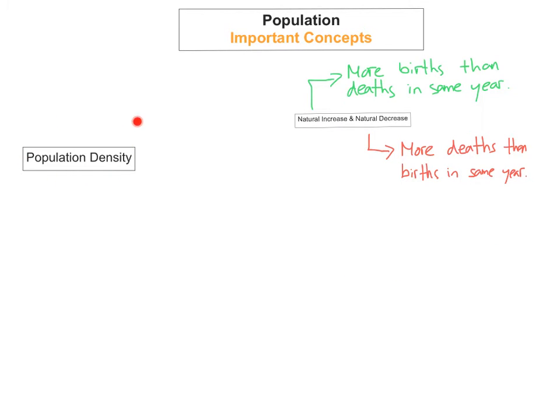Another concept that's really important to know is population density. This is the average number of people living in a square kilometer. For example, Dublin would have a very high population density because the average number of people living in a square kilometer is very high. The west of Ireland would have a very low population density.